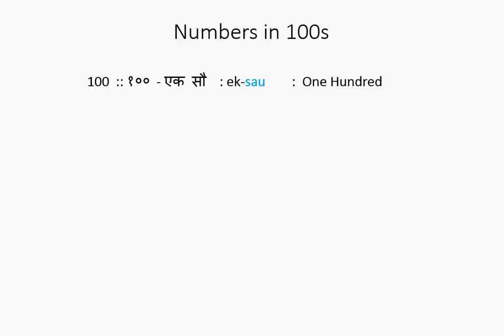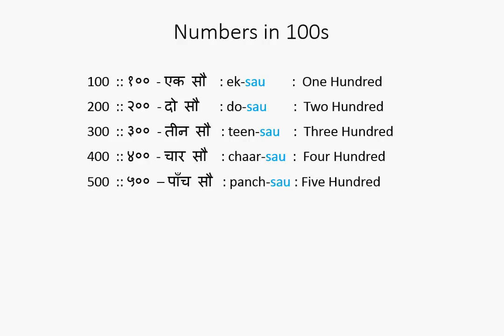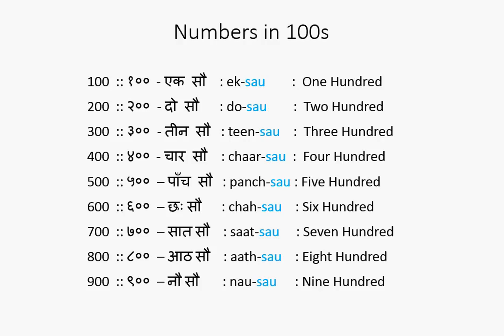200 is simply Do Sao. Then Teen is 3 — Teen Sao. Ek Sao, Do Sao, Teen Sao. After 3 comes 4 — Chaar Sao is 400. Then Paanch Sao is 500. Chaai Sao is 600. Saat is 7, so 700 is Saat Sao. Eight is Aat — Aat Sao is 800. Nao is 9, so Nao Sao is 900.